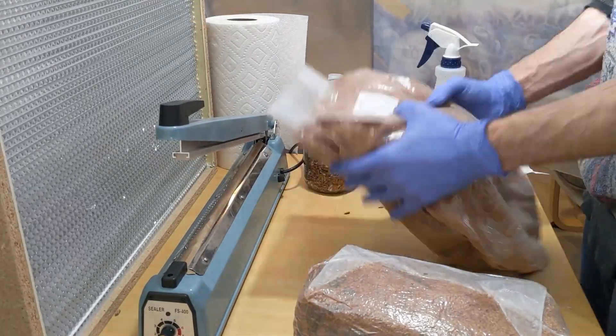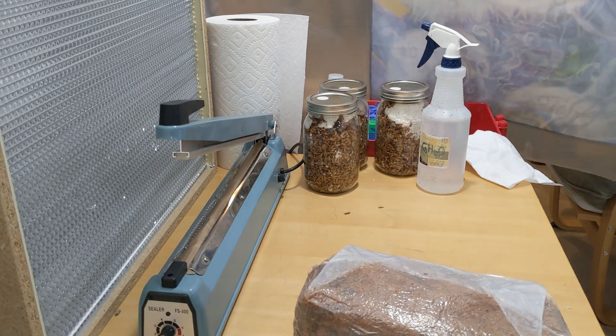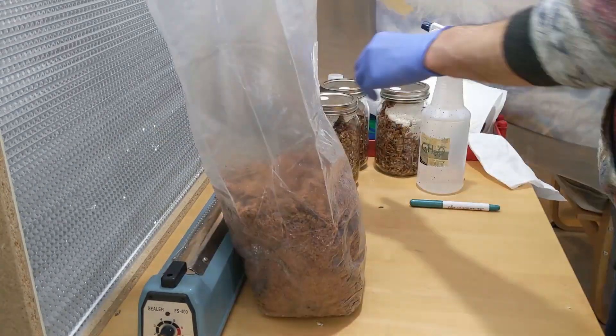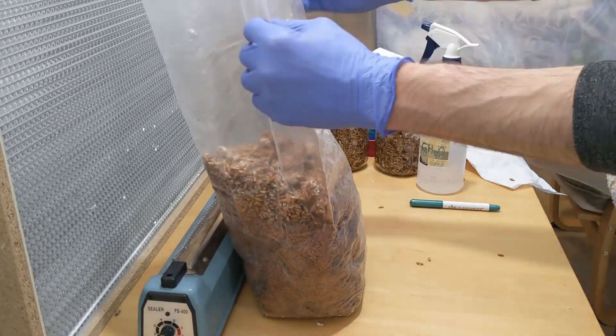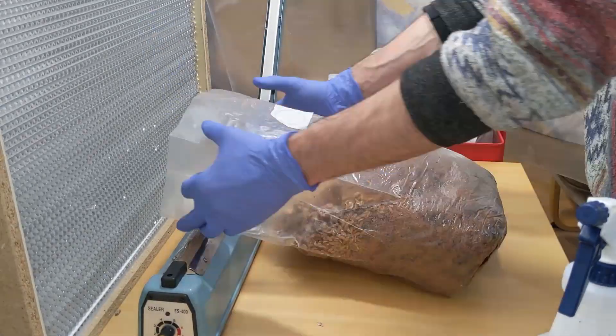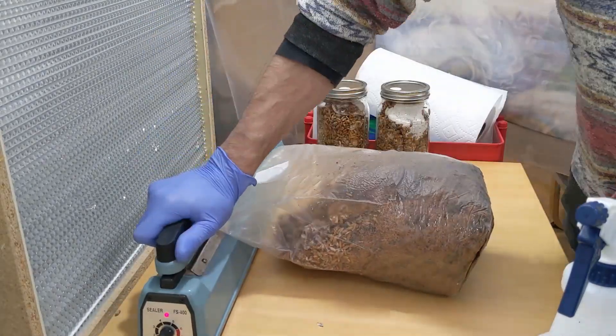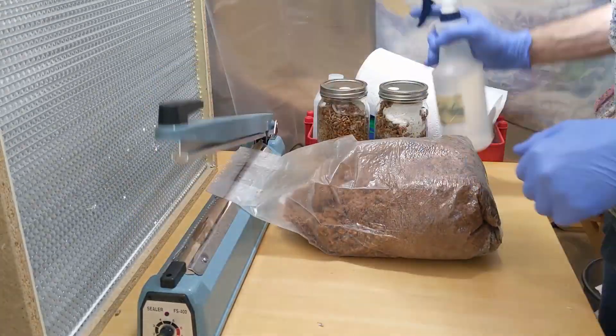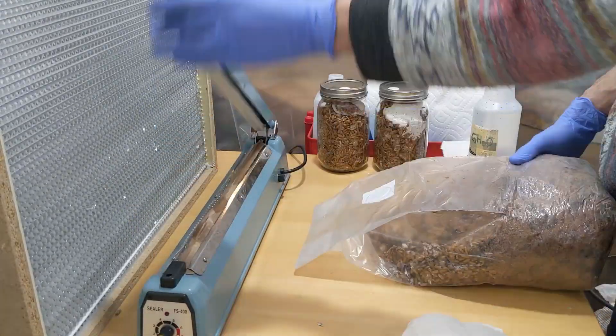With the second bag, once I'm done dumping the grains in, I kind of let it take in a little bit of air. As you can see, it's a little bit bloated, and now the shaking part is much easier and everything is going to get dispersed and we can ensure an even colonization.